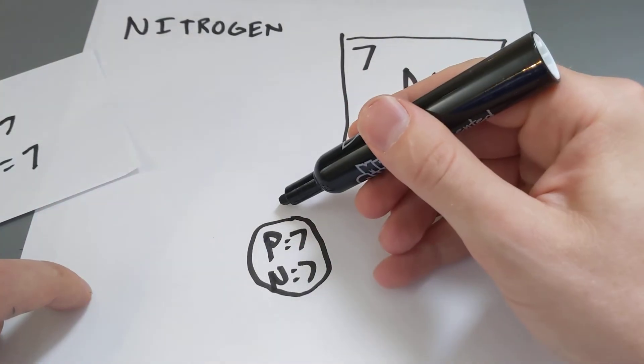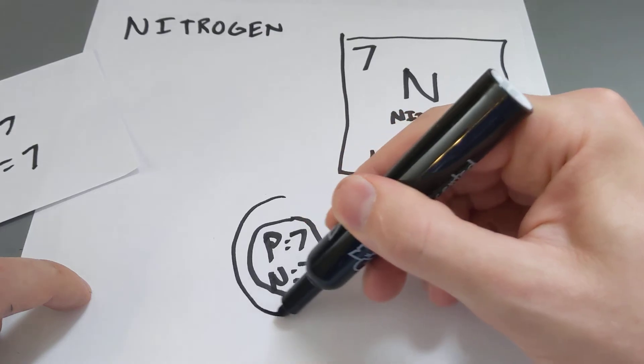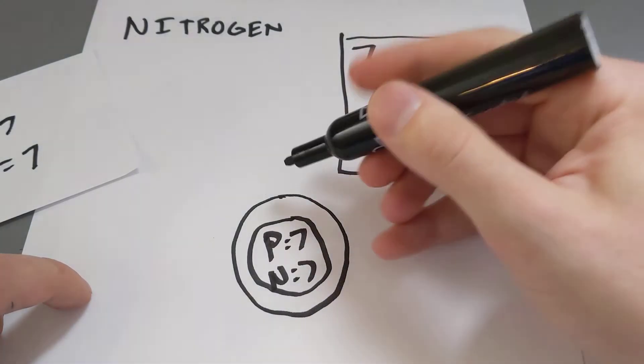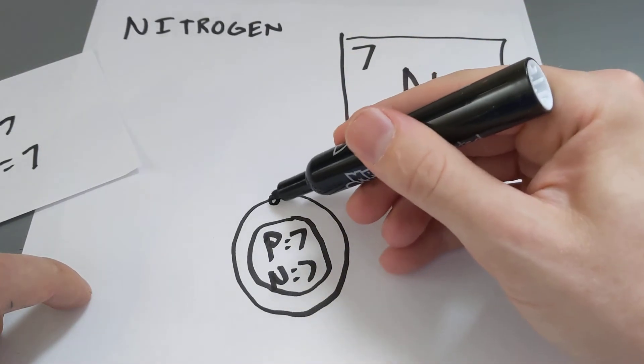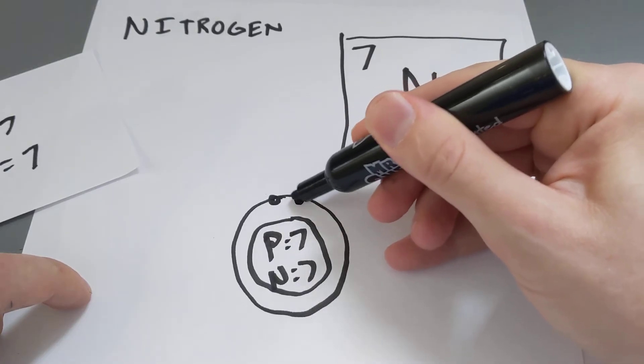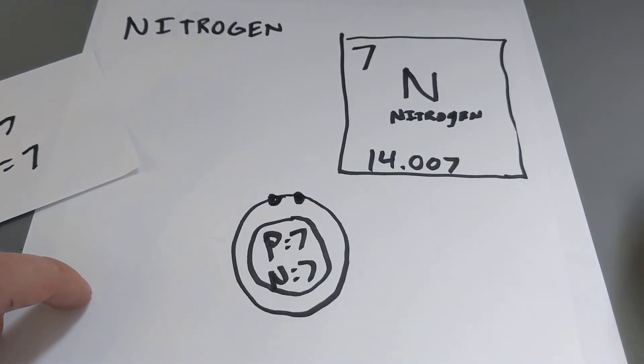First, we're going to start with an outer shell. Well, our only shell so far. For that shell, we've got 2 electrons maximum. So, the first shell can only hold 2 in our 2 electrons.